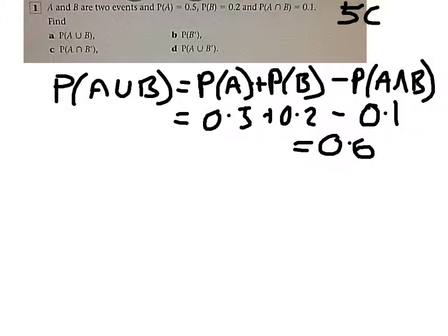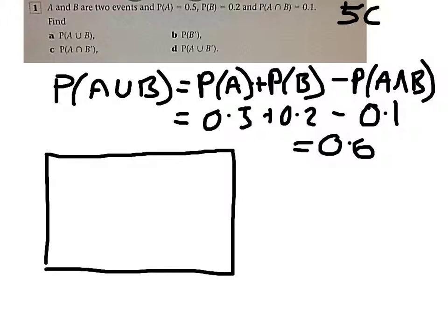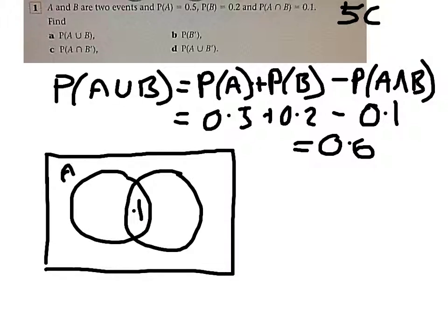On to the second part. Now I prefer at this stage to do the Venn diagram and then just pick all the answers from the diagram. I've placed the overlap of 0.1 into the overlap. If A is 0.5 and 0.1 of it is in the overlap, 0.4 will be here. With B being 0.2, 0.1 in the overlap, so the other bit to make up 0.2 must be there. If we add our probabilities together, we're going to get 0.6, which means outside of A and B will be 0.4. Now that should get us through the rest of the questions.